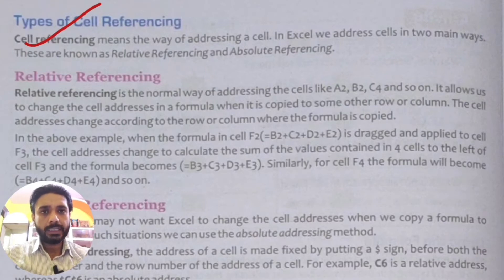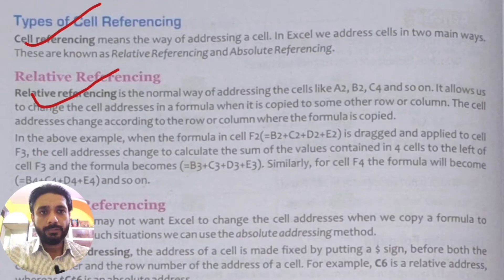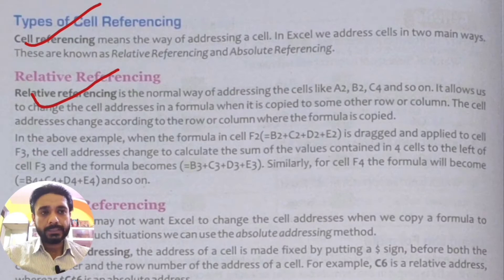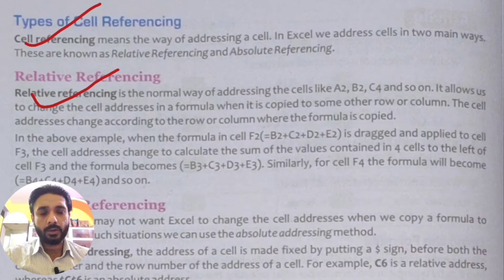Now, what is the meaning of relative referencing? Relative referencing is the normal way of addressing the cell like A2, B2, C4 and so on. In the last class, I told you that in Excel, we represent cell and the address of column and row. First, we write column and then we write row number. So A2 is the column and second row. It allows us to change the cell address in a formula when it is copied to some other row or column. These cell addresses change according to the row or column where the formula is copied. As we copy the formula, the row and column will automatically change.